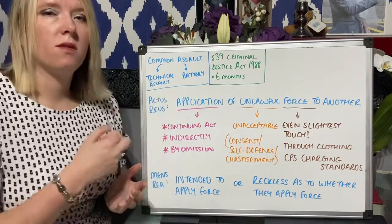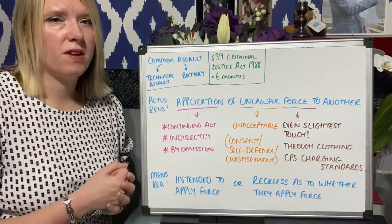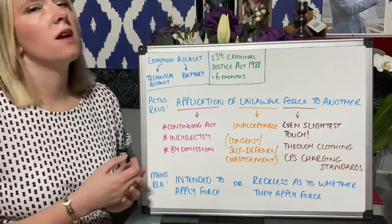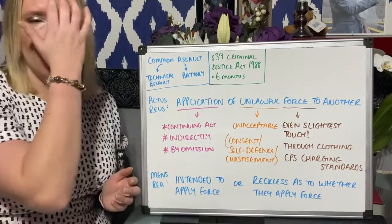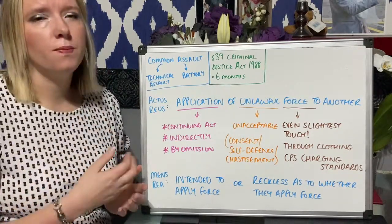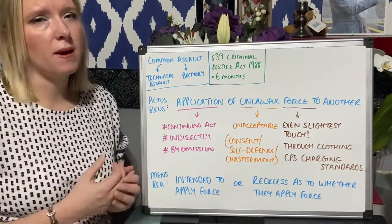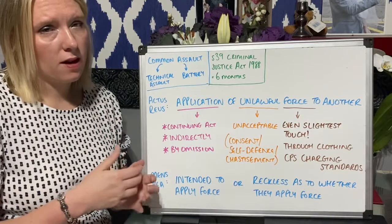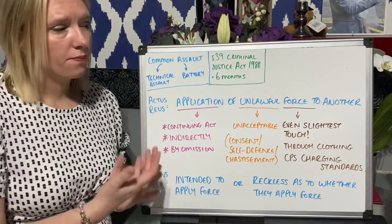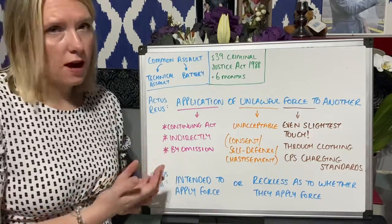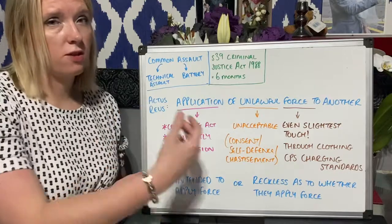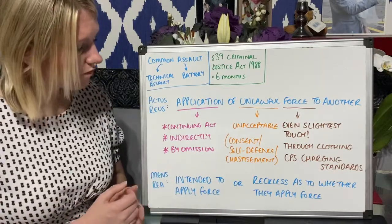You can also apply force through an indirect chain, as seen in Haystead. The defendant punched the victim who was holding a baby, causing her to drop the baby. That was applying unlawful force to the baby as well, because it was applied through her.